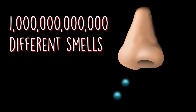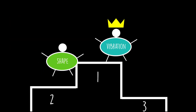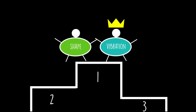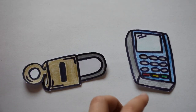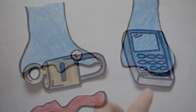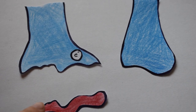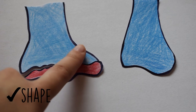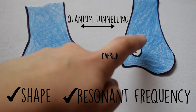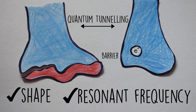Therefore, to explain the complex processes happening in our nose and resulting in the one trillion different smells we can distinguish, we probably need a combination of the shape model and the vibration model — that is, both a lock and key and a swipe card system. It might be that volatile molecules reaching our nose are first checked for their shape, and then for their resonance vibration through quantum tunneling within the receptors.